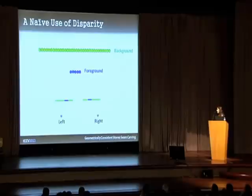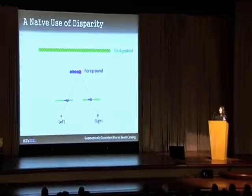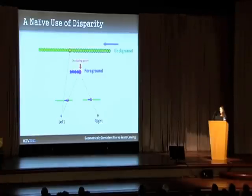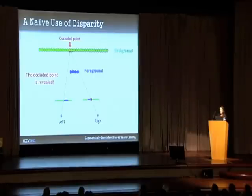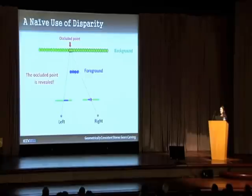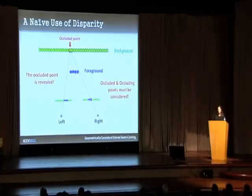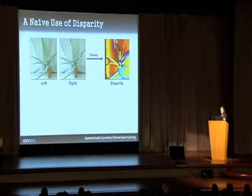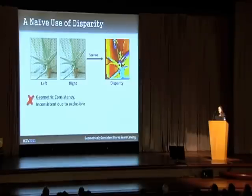In fact, the problem runs even deeper. If we want to remove foreground points that are visible in both views, we notice that this point occludes a background point. By removing it, the occluded point is revealed in the right image. Since no pixel in the right image back-projects to that point, there is no feasible correct 3D interpretation of that action. So occluding points are also a problem, and both occluded and occluding points must be carefully considered. To conclude, a naive use of disparity results in inconsistent geometry since occlusions are not taken into account.